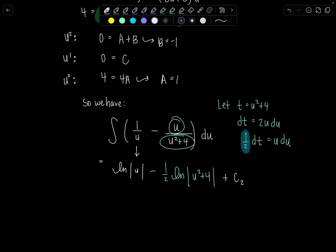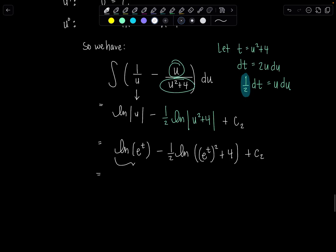Now, let's go back to the original variable. Remember, u was e to the t, so this is ln e to the t. e to the t isn't going to be negative, so I'll just write it as e to the t. I don't need absolute value. Minus 1 half ln. This is going to be absolute value, but I can just switch to parentheses. This is e to the t squared plus 4 plus c2, almost there. Natural log of e to the t, oh, that's just t, minus 1 half ln e to the 2t plus 4 plus c2.